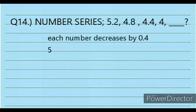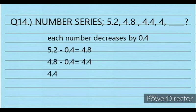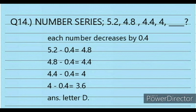Solution: Each number decreases by 0.4. So: 5.2 minus 0.4 equals 4.8; 4.8 minus 0.4 equals 4.4; 4.4 minus 0.4 equals 4.0; 4.0 minus 0.4 equals 3.6. The answer is letter D.